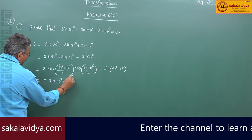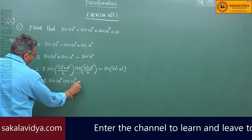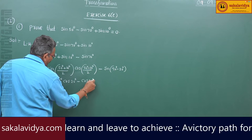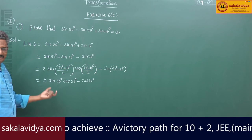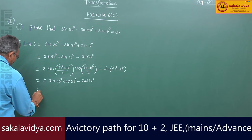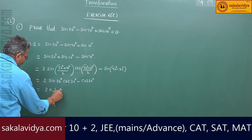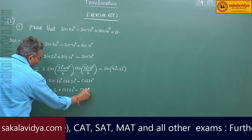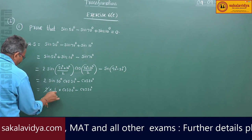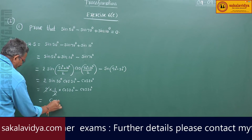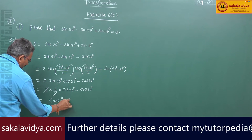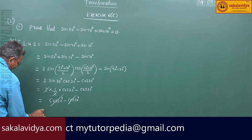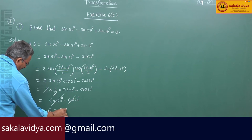Using sin(90° - θ) = cosθ, sin70° becomes cos20°. Since sin30° = 1/2, we get 2 × (1/2) × cos20° minus cos20°, which equals cos20° minus cos20° = 0. This is the RHS.